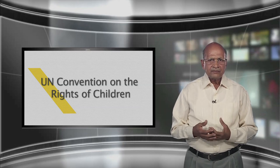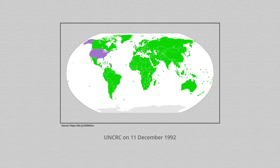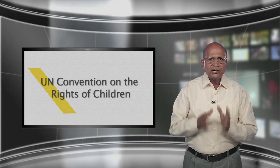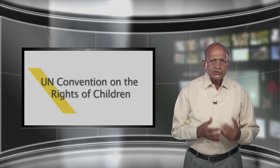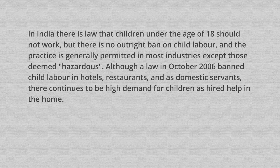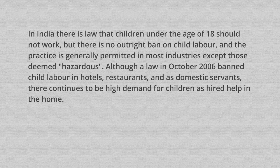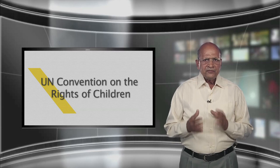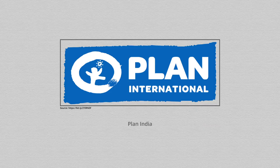UN CRC and India: India ratified the UN CRC on 11th December 1992, agreeing in principle to all articles except with certain reservations on issues relating to child labour. In India there is a law that children under the age of 18 should not work, but there is no outright ban on child labour and the practice is generally permitted in most industries except those deemed hazardous. Although a law in October 2006 banned child labour in hotels, restaurants and as domestic servants, there continues to be high demand for children as hired help in the home. A few of the organizations working with children's rights in India are Plan India, CRY (Child Rights and You), Save the Children, Bal Vikas Dharah New Delhi, Bachpan Bachao Andolan and Kod Hyderabad.